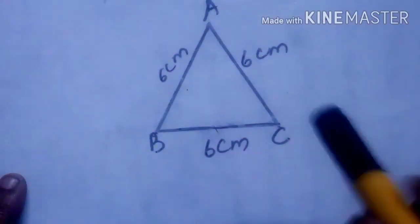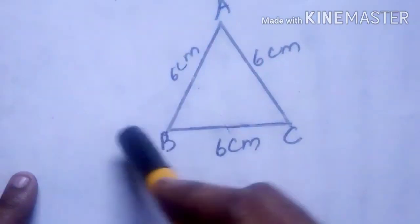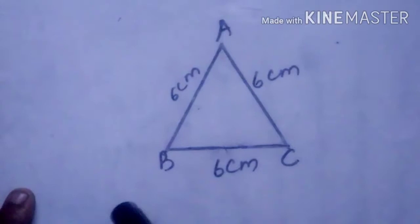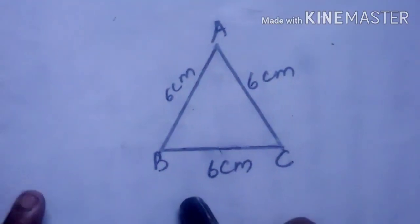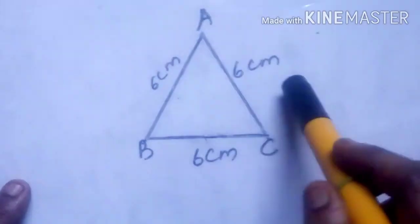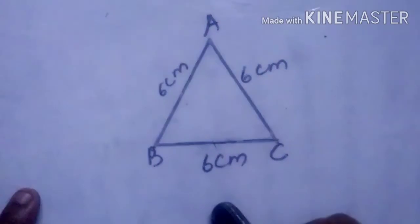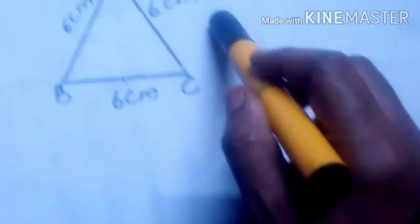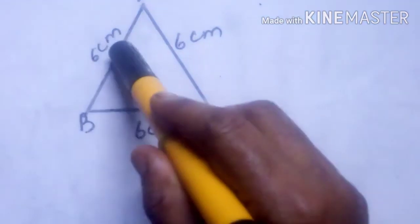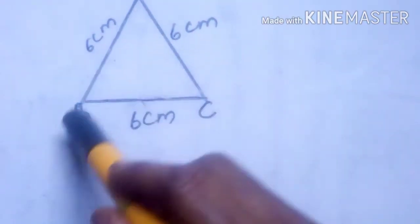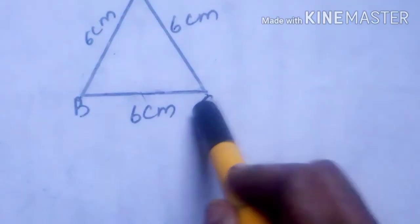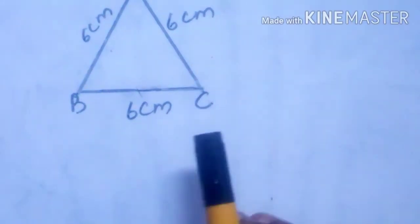To summarize: an equilateral triangle has three sides of equal length and all three angles are 60 degrees. An isosceles triangle has two sides of equal length and two angles of equal measurement. A scalene triangle has all sides of unequal length and all three angles of unequal measurement. This equilateral triangle has three equal sides and each angle A, B, C is 60 degrees.